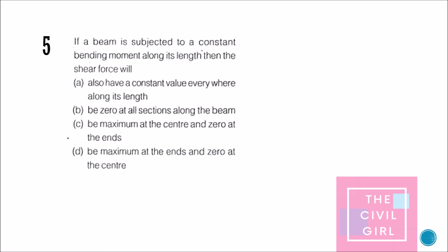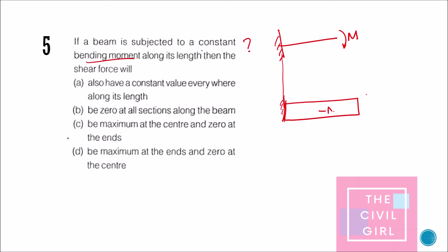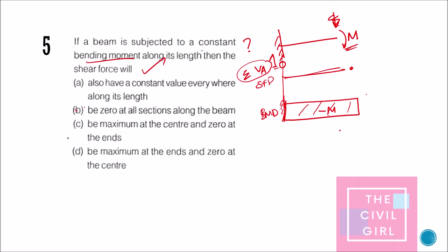Final question: if a beam is subjected to a constant bending moment along its length, what will the shear force be? Consider a cantilever beam with only a moment applied at the free end. The BMD is a constant value (−M) throughout. Since there are no vertical forces acting, summing all vertical forces gives zero, so the shear force diagram is zero at all sections along the beam. This is part one of this video; part two will be in the next video.